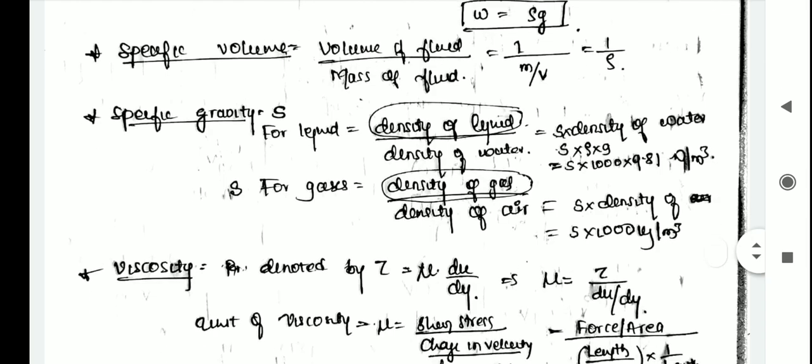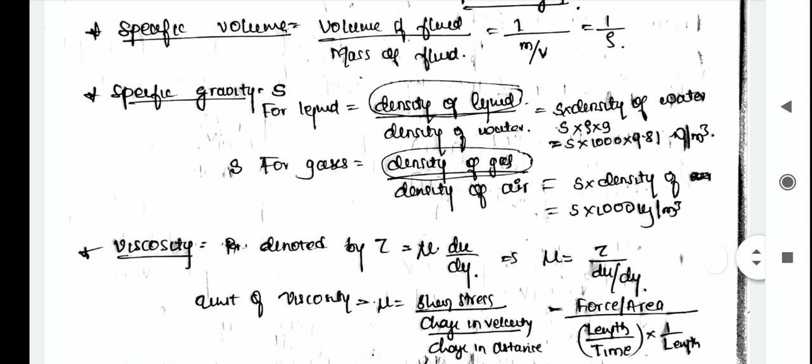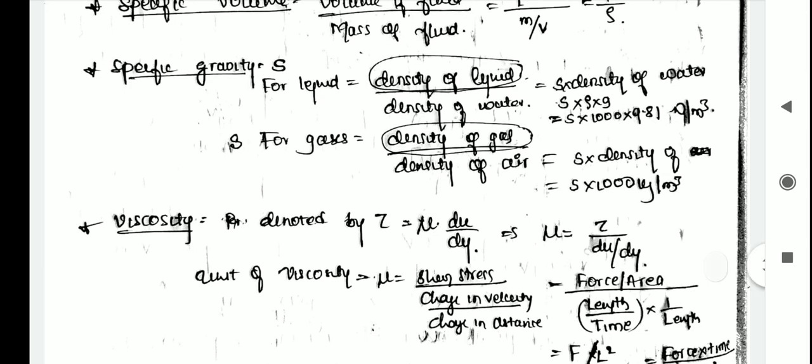The next property is specific gravity. For a liquid, it is the ratio of density of the liquid to the density of water. For gases, it is the ratio of density of the gas to the density of air. If specific gravity S is known, the density of the fluid equals S multiplied by density of water. So S into rho into G gives 1000 into 9.81 in Newton per meter cube.